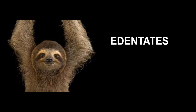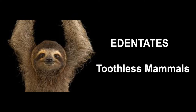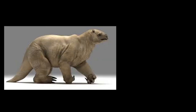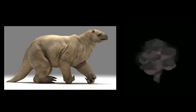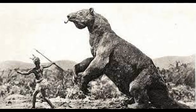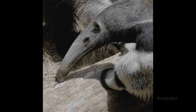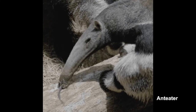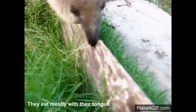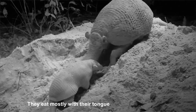Ground sloths are classified as edentate or toothless mammals, although they were never totally toothless. These animals developed in South America but wandered as far north as the Carolinas and Ohio. They became extinct at the beginning of the next era, and some scientists think primitive man may have been responsible. Modern edentates include anteaters and armadillos, which do not have teeth and eat mostly with their tongue.